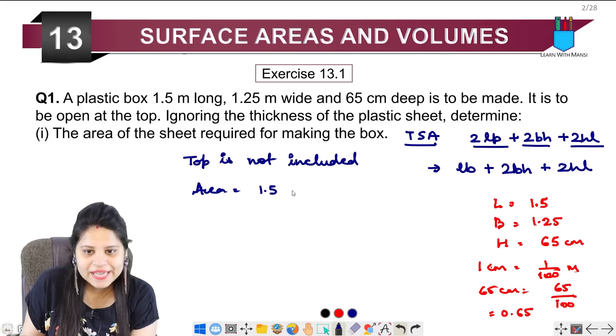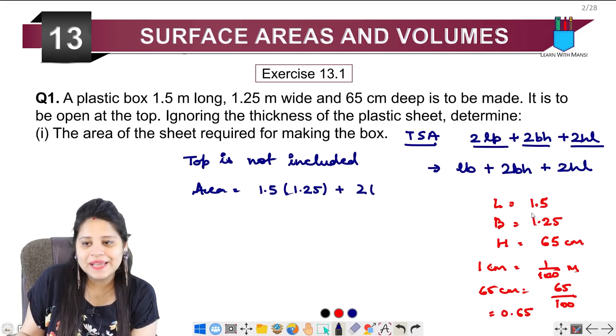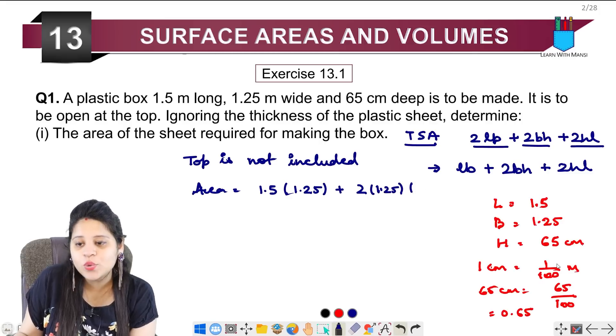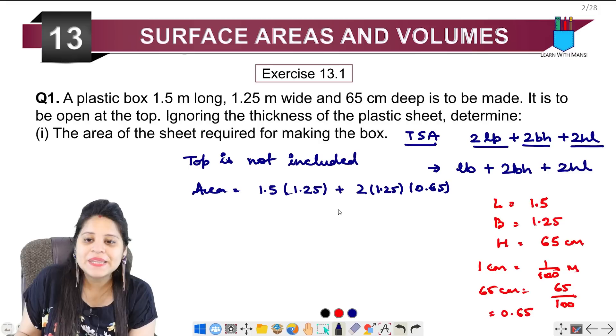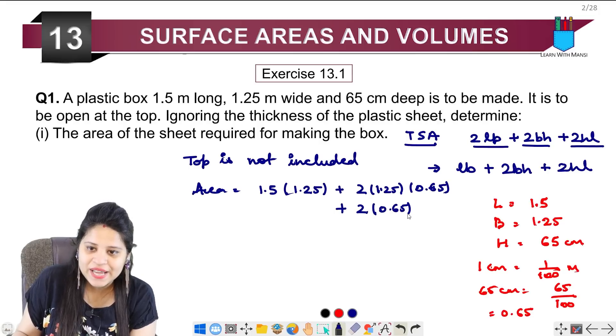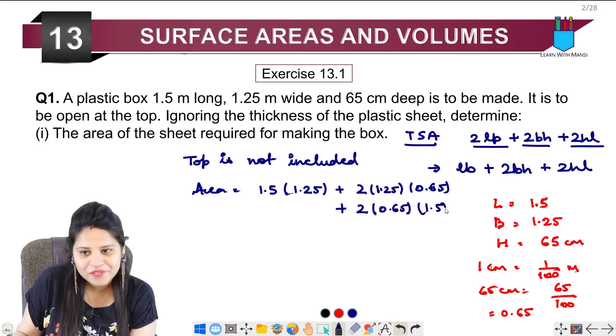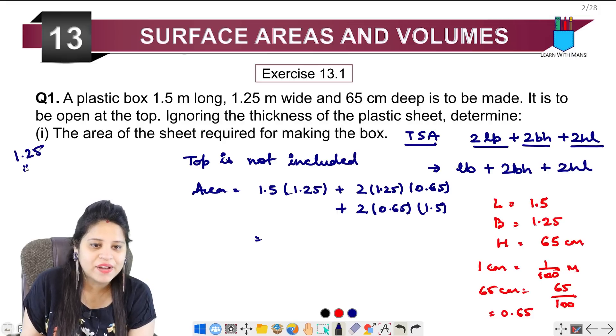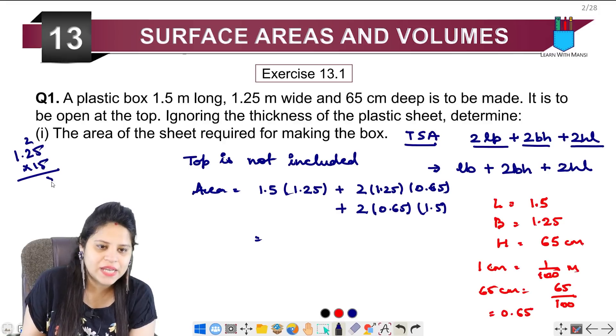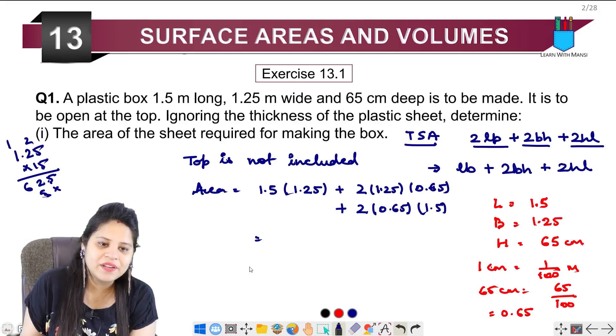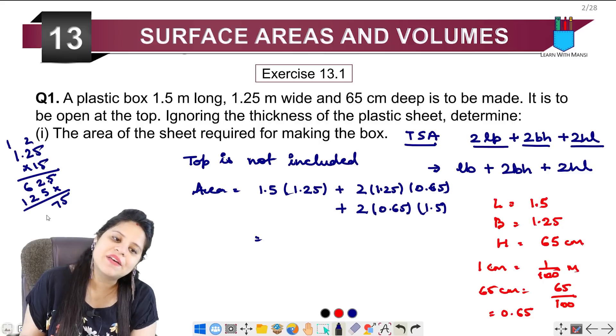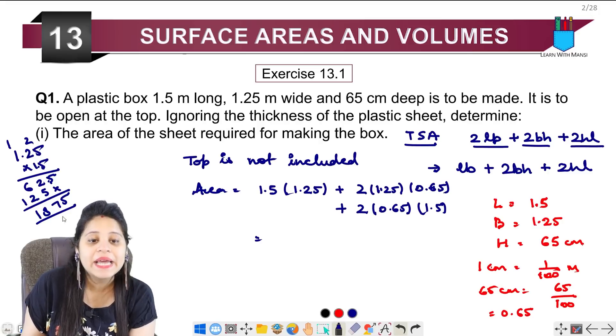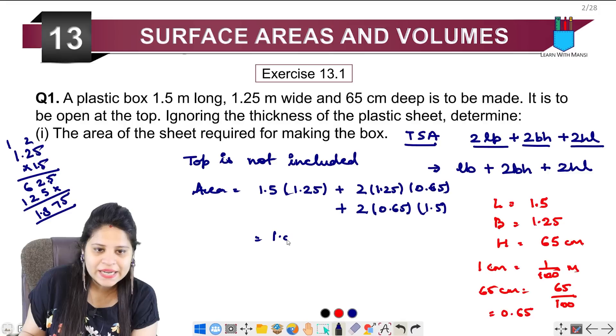This is going to be length into breadth. 1.5 and breadth is 1.25. Then, next is plus 2. Now, breadth is 1.25 into height. Then, again, plus 2. How much height is? 0.65 and length is 1.5. So, we will solve this. We need to multiply. Let's multiply. 5, 5 is 25. 5 plus 10. This will be 12. 5 plus 1 is 6. This will be 1.875.